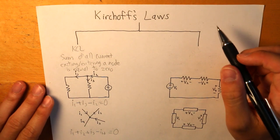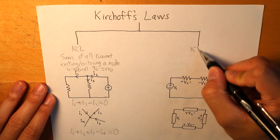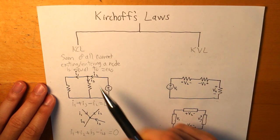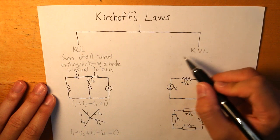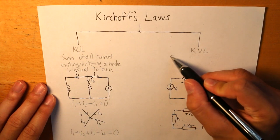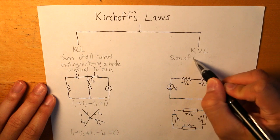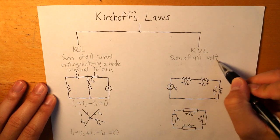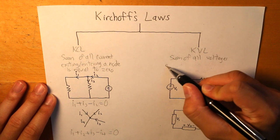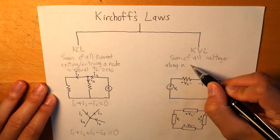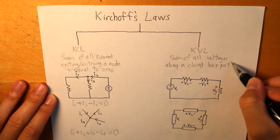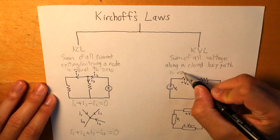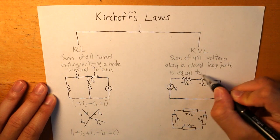Let's move on to Kirchhoff's voltage law, KVL. And KVL is almost the same thing as KCL. It states that the sum of all voltages along a closed loop path is equal to zero.